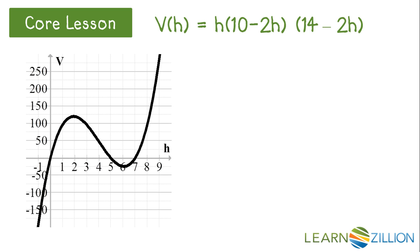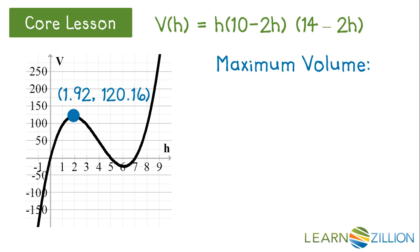Let's take a closer look at our function and use it to find the maximum volume of the box. We have a relative maximum at the point (1.92, 120.16). Because the output of our function is the volume of the box, our maximum volume should be 120.16 inches cubed.